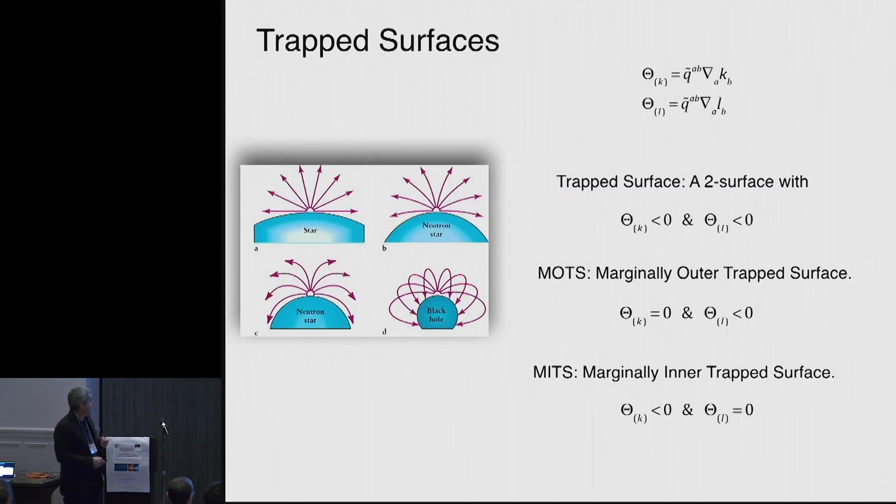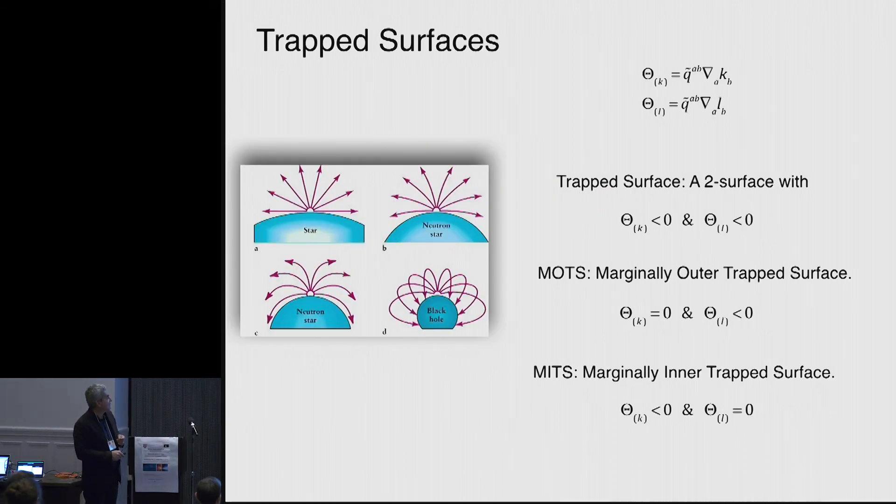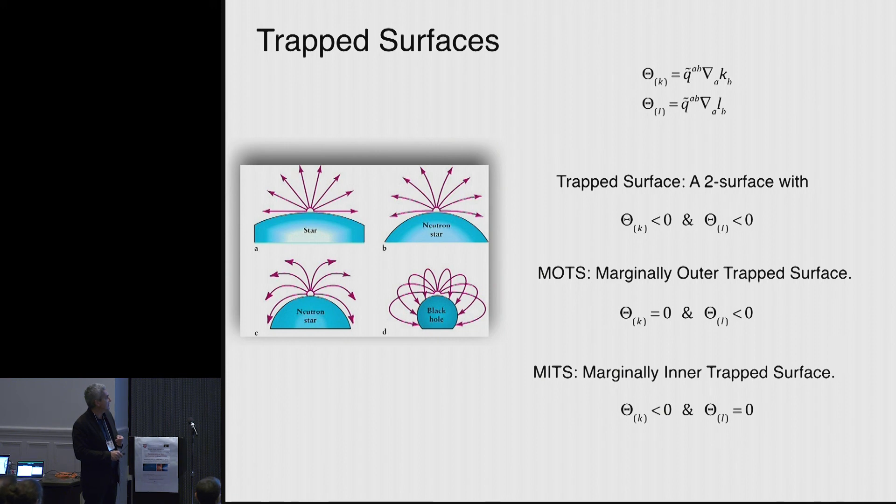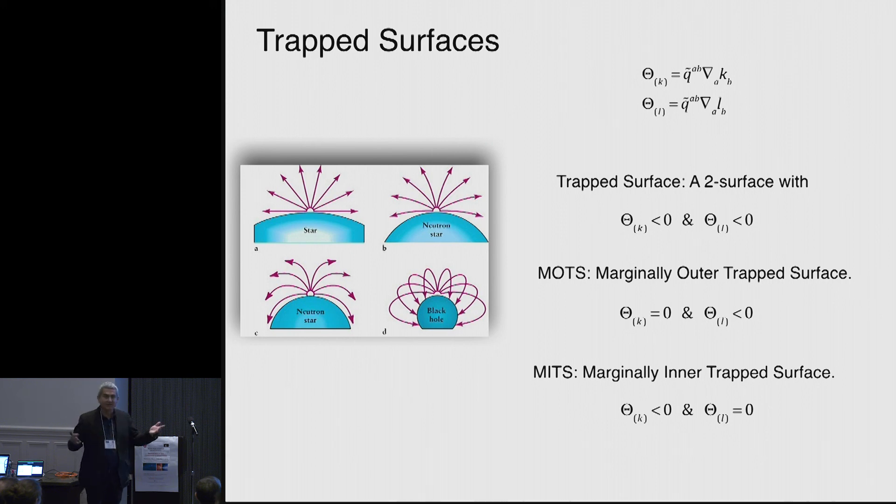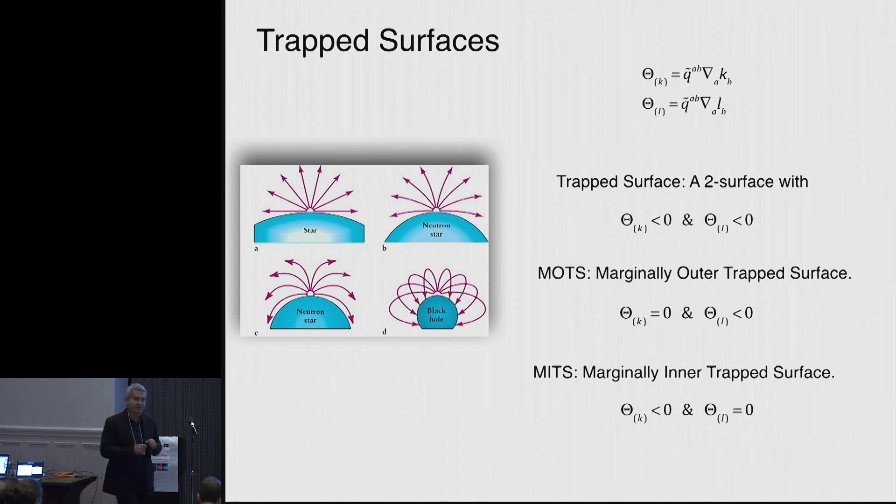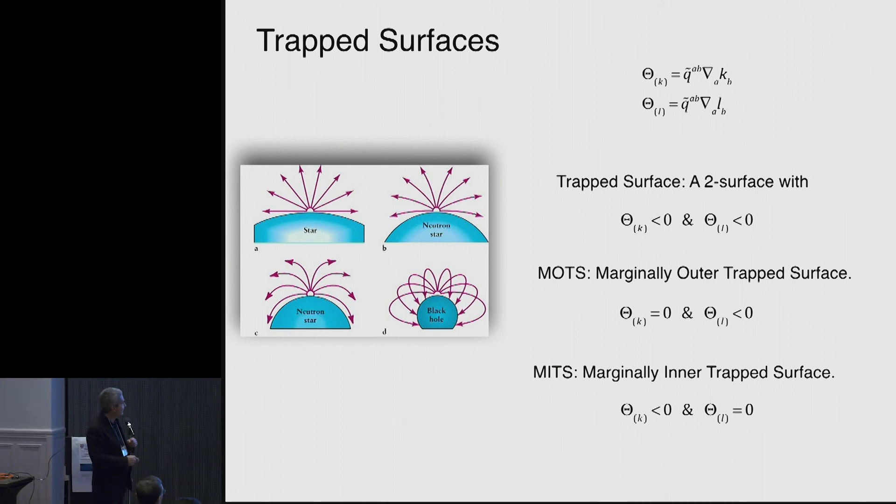Now, in the region, so a trapped surface is a region where both the ingoing and outgoing null expansions are negative. The outermost is when the outgoing is zero. So we just calculate that everywhere and identify those regions and we're done. So those spheres that you found that we call the horizon are just calculated by finding the region where this is.